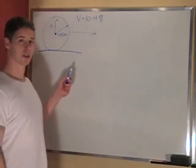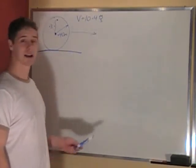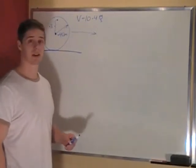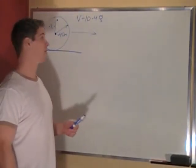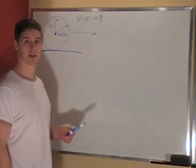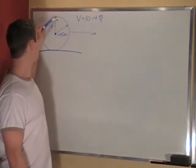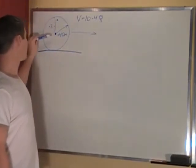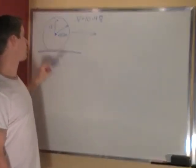In this problem, there's a barrel that's rolling at 10.4 meters per second, and it has a radius of 0.4 meters. We're asked what the angular velocity of this barrel is. The second part of the question asks what the tangential speed is at 0.1 meters away from the edge, and as you can see by the drawing, that makes it 0.3 meters away from the center.